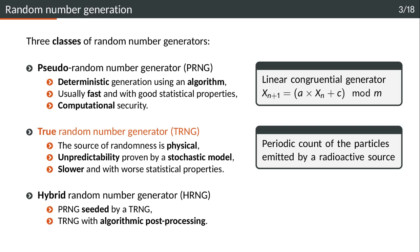The second class are true random number generators. In this case the source of randomness is physical and the unpredictability of the sequence is proven by a stochastic model. Usually those generators are slower and they have worse statistical properties. An example is the number of particles emitted by a radioactive source over a fixed period of time.